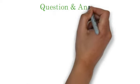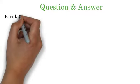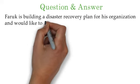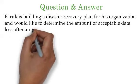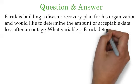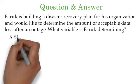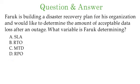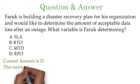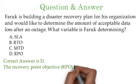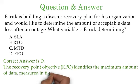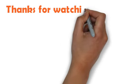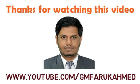Another question: Farooq is building a disaster recovery plan for his organization and would like to determine the amount of acceptable data loss after an outage. What variable is Farooq determining? Option A: SLA. Option B: RTO. Option C: MTD. Option D: RPO. The correct answer is D, because the recovery point objective identifies the maximum amount of data, measured in time, that may be lost during a recovery effort. Thank you for watching.